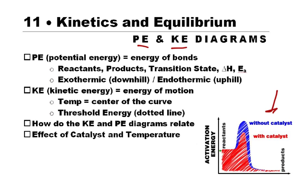We should have the reactants, we have the products, we have the transition state, we have the energy it takes to get to the transition state, which is called the activation energy, E sub A, and we have the difference in energy from the initial to the final state, which is called the delta H.